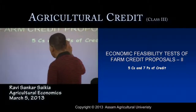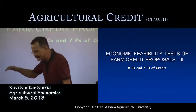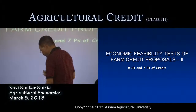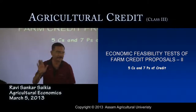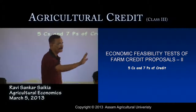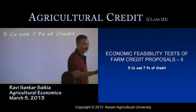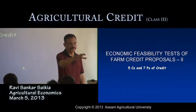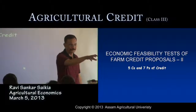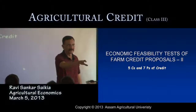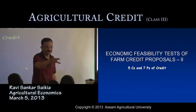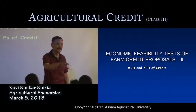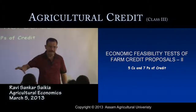We will discuss the five C's and seven P's of credit as another way to examine the economic feasibility test. This is to assess the economic viability of the project — meaning the enterprise. When the farmer selects a project and submits it to the bank to get a loan, the banker examines the project and looks at all items related to where the farmer will invest the loan.